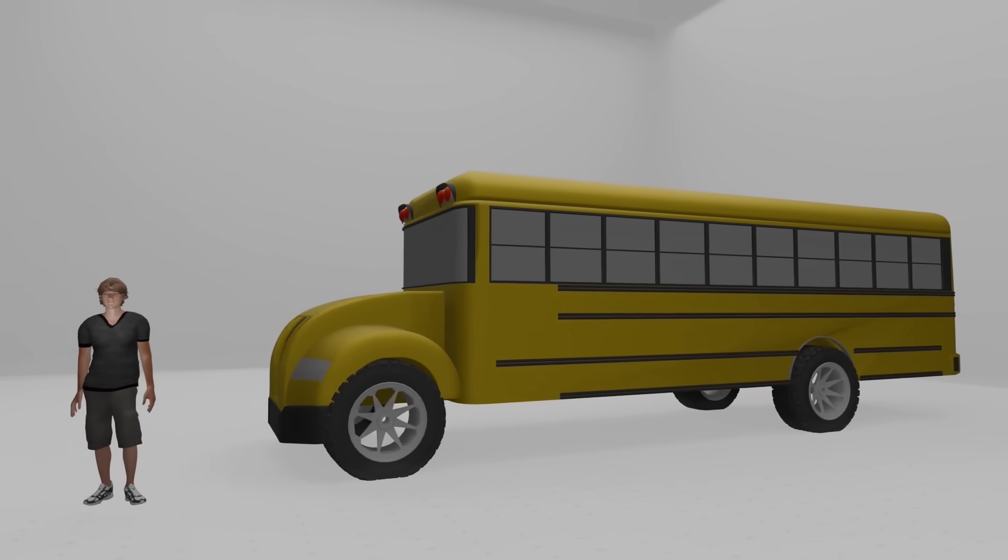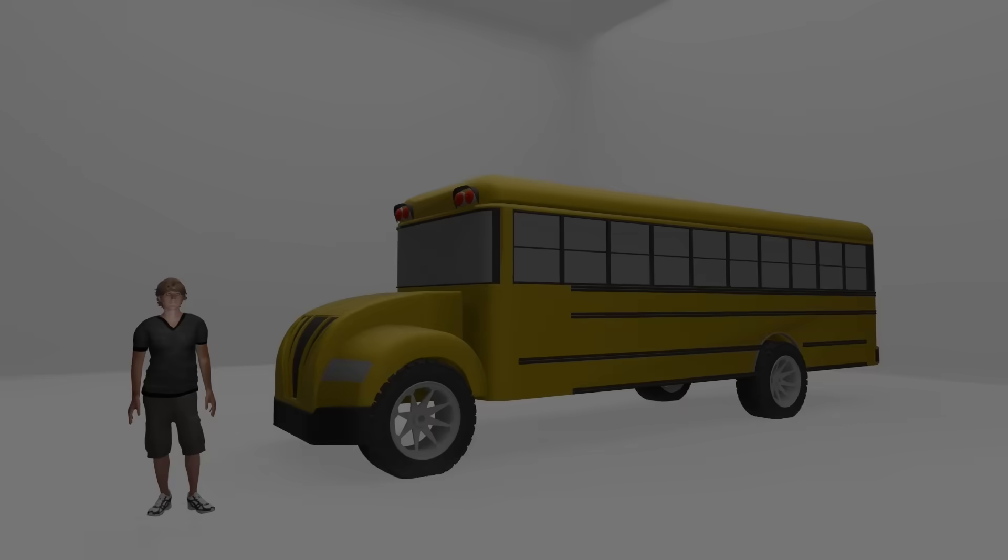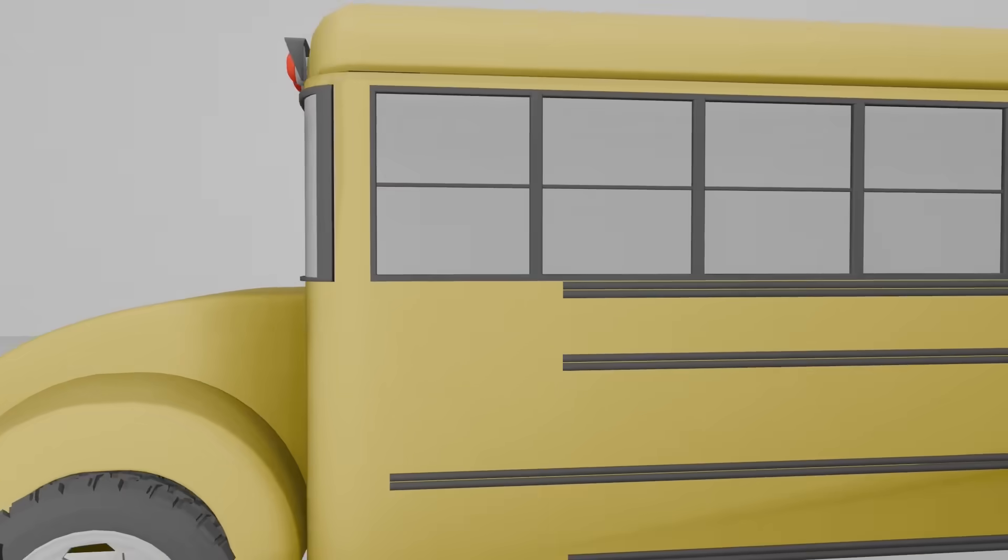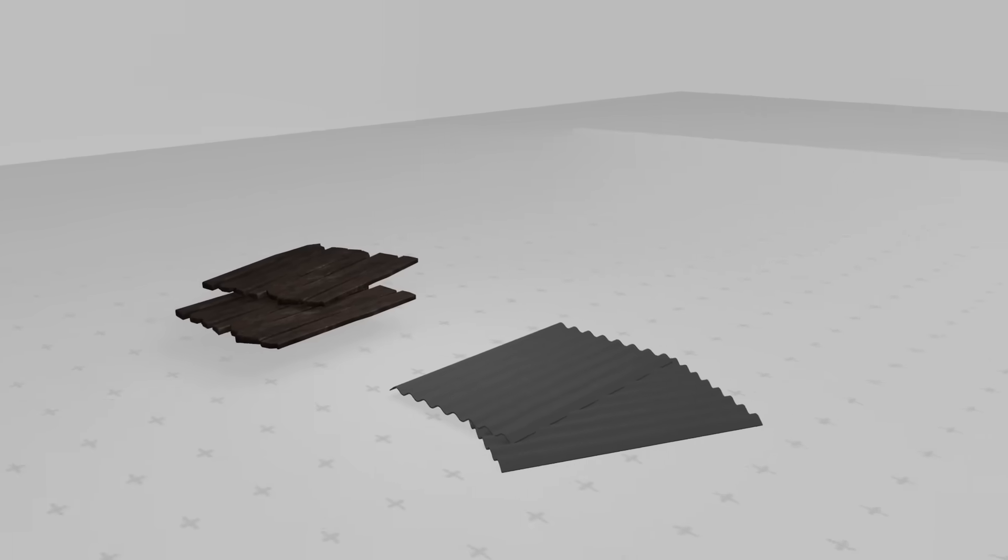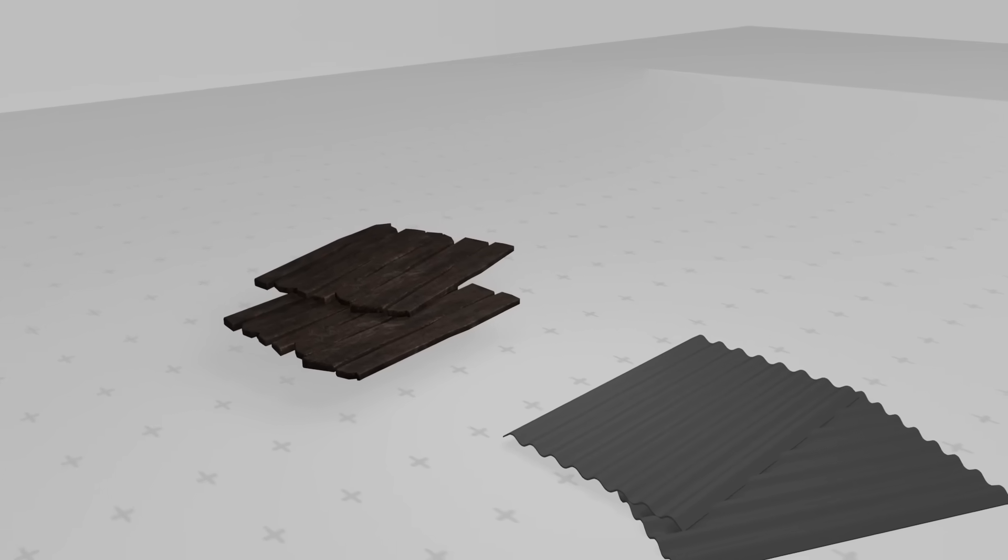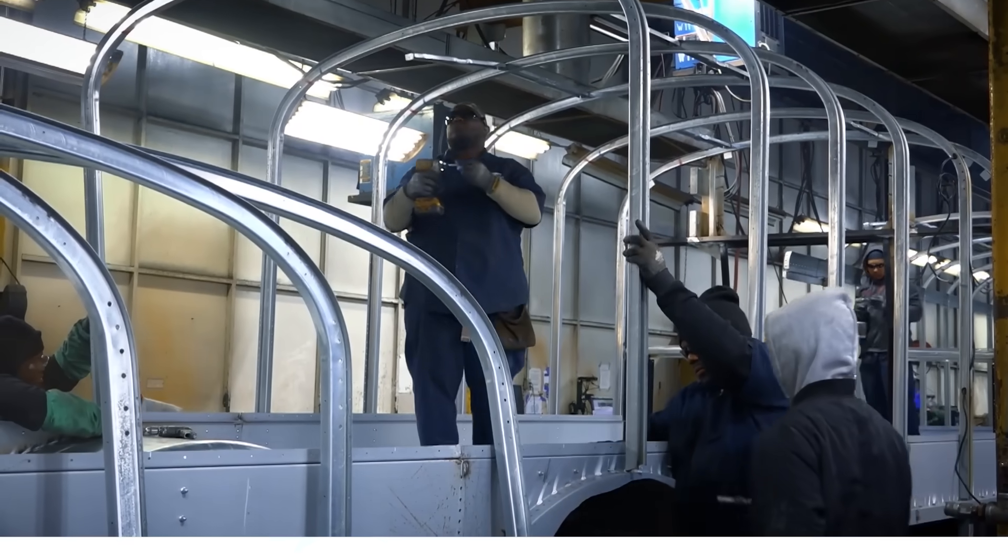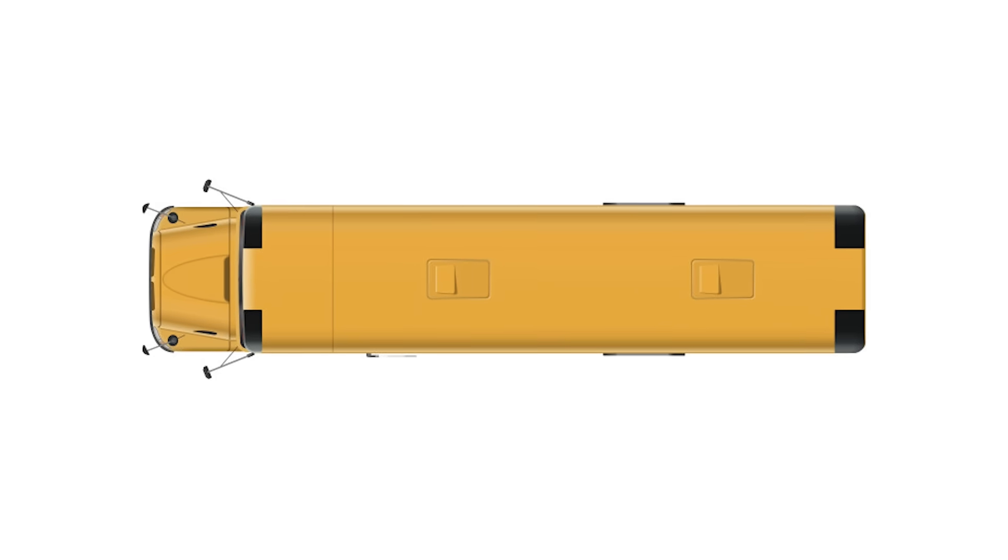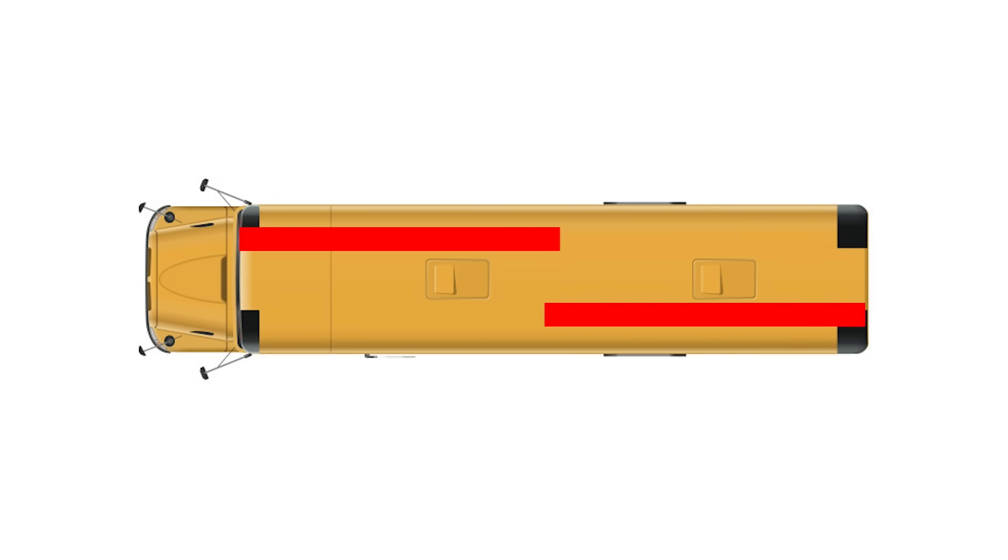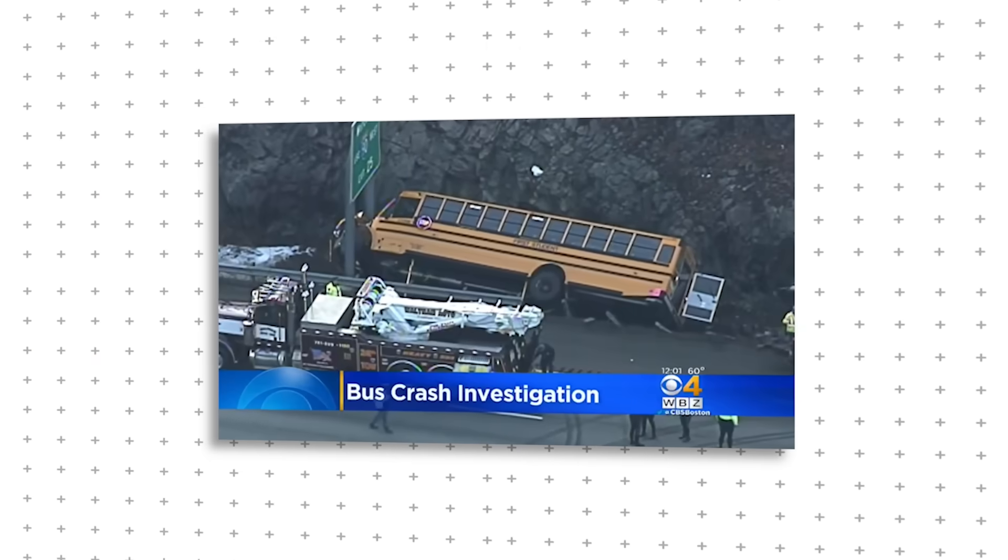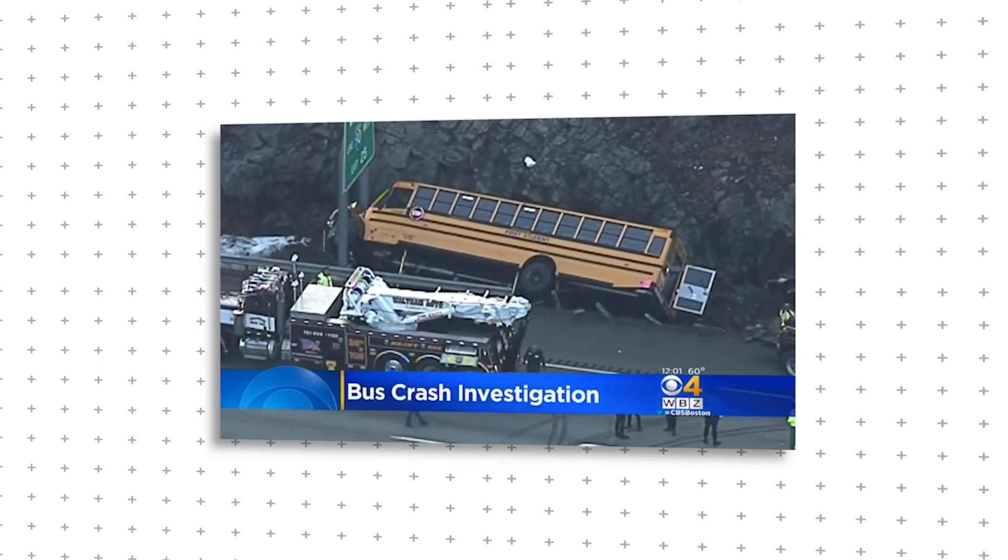And how did engineers turn these once dangerous machines into the safest vehicles on the road? The first real step toward making school buses safer started with their structure. Early models were built with thin wooden or sheet metal exteriors, offering almost no crash protection. Engineers changed that by reinforcing school buses with steel frames. Instead of relying on the exterior shell for strength, they built an internal steel cage that acted as the bus's skeleton. This design spreads impact forces evenly throughout the structure, rather than concentrating them at a single weak point. If a bus rolled over, the frame held its shape, instead of the roof caving in.